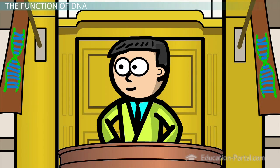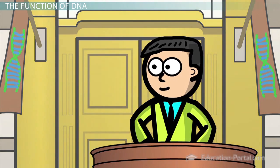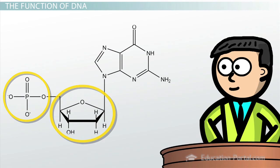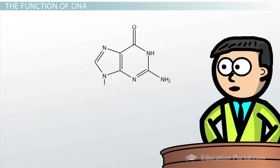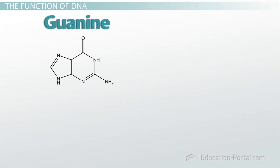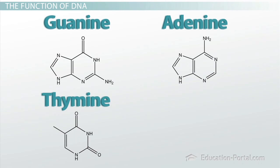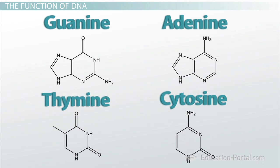You see, you need to understand the chemistry behind DNA to fully appreciate the importance and function of the molecule. The phosphate group and sugar are the same in every nucleotide, but there are four different nitrogenous bases: guanine, adenine, thymine, and cytosine.